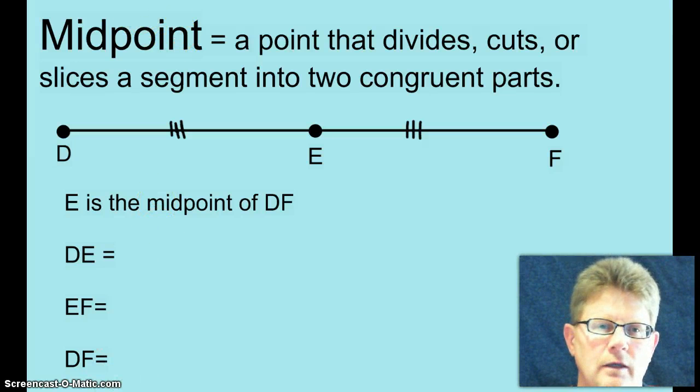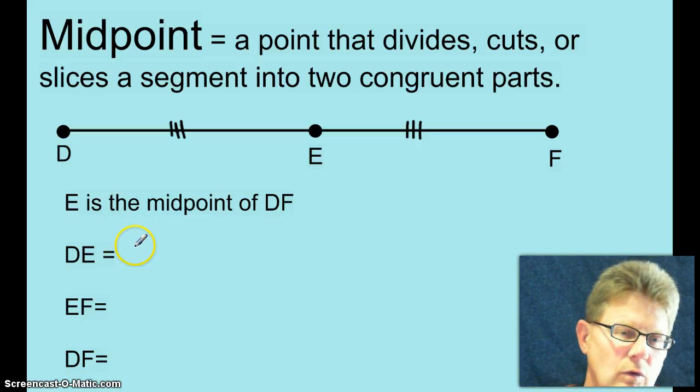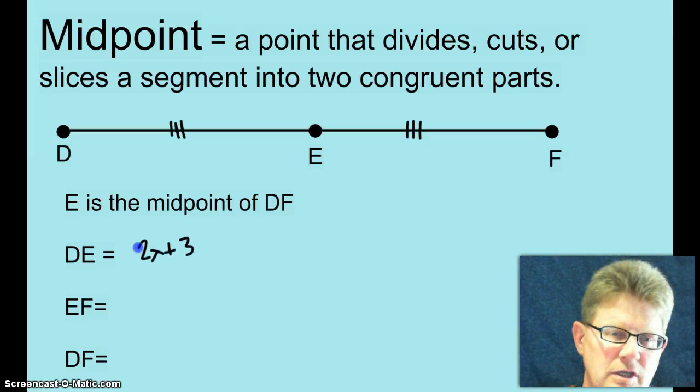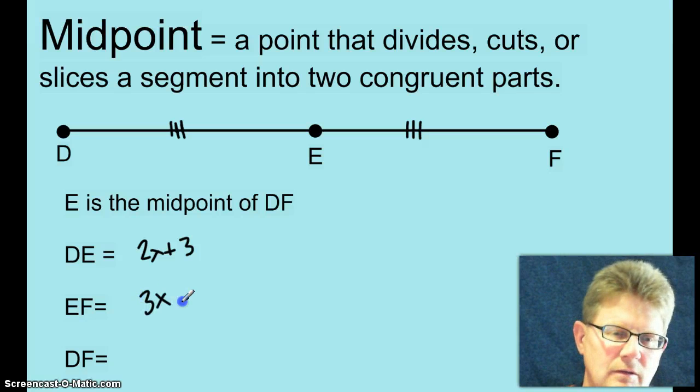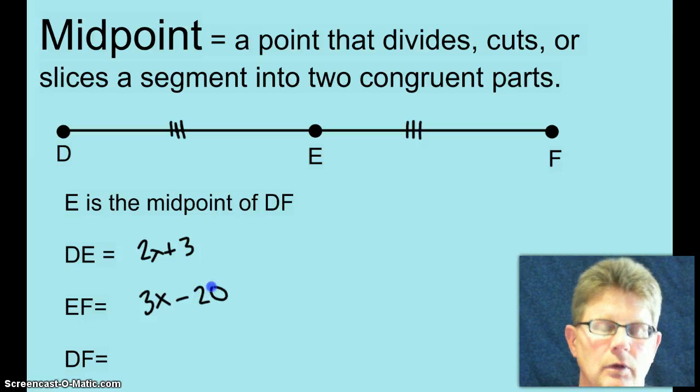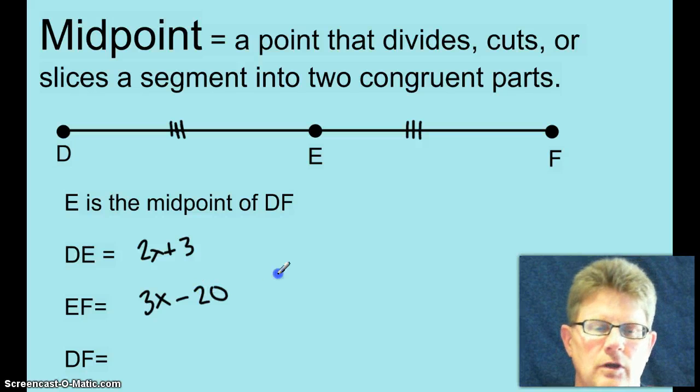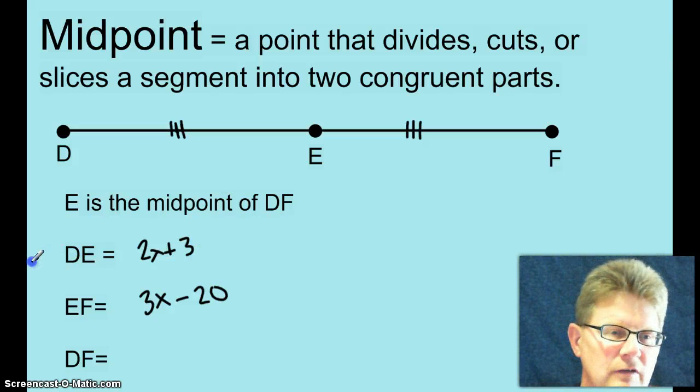So since I didn't stump you, let's try one more way that an algebra teacher might try to stump you. Okay, how about if he told you that DE was 2X plus 3 and that EF was 3X minus 20. Would that help you? Could then you figure out the lengths of all three segments? Well, I hope you can.